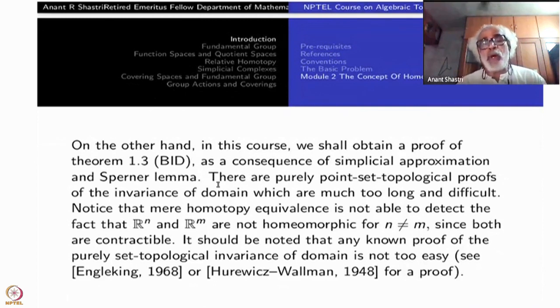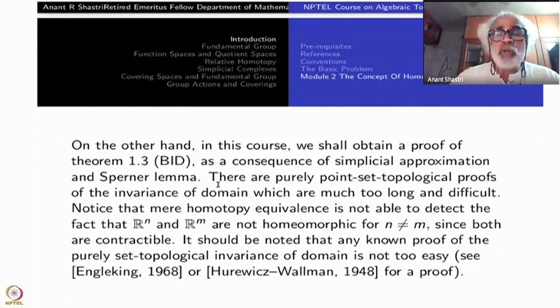There are of course, purely point set topological proofs of this invariance of domain which are much too long and difficult. So-called dimension theory books have been written on that. Notice that mere homotopy equivalence is not able to detect the fact that R^n and R^m are not homeomorphic for n not equal to M because both of them are contractible and therefore they are homotopy equivalent to each other. It should be noted that any known proof of purely point set topological invariance of domain is not too easy at all. All proofs are somewhat quite involved and lengthy.